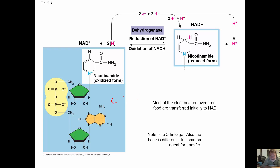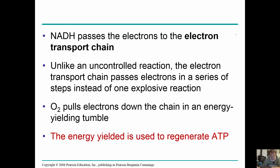The two hydrogens in NADH come from food. Most electrons removed from food are transferred initially to NAD+. NADH then passes electrons to the electron transport chain. Unlike an uncontrolled reaction, the electron transport chain passes electrons in a series of small steps instead of one explosive reaction. This energy is what we use to regenerate ATP.